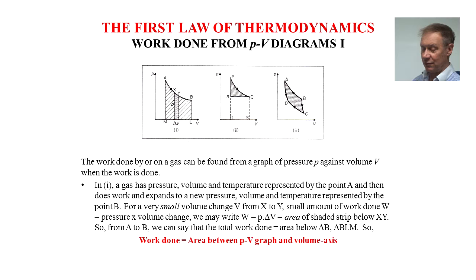We can write W is P delta V, equals area of shaded strip below XY. From A to B, the total work done equals area below AB, or ABLM. So work done equals area between PV graph and volume axis.